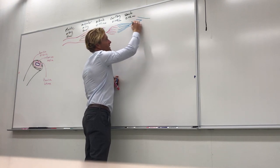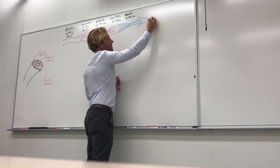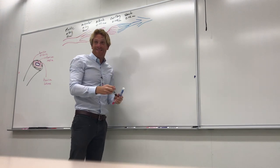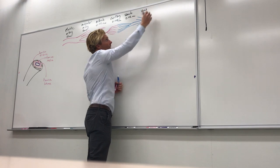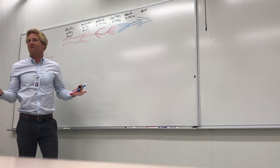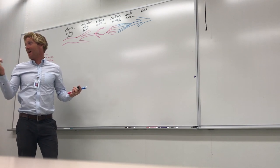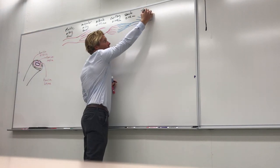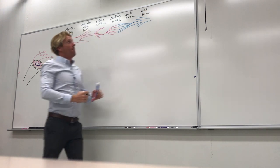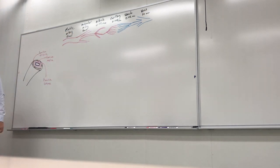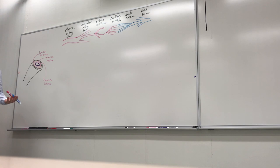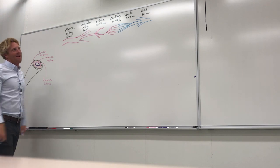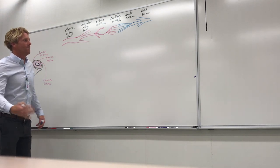Venules combine with one another to form larger vessels that carry blood back to the heart — these are our veins. The largest veins are about 10 millimeters in diameter. The aortic arch is the widest at about 15 millimeters, and the vena cavae are a little smaller — but still very large vessels.